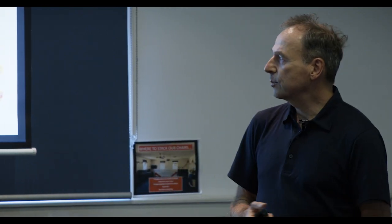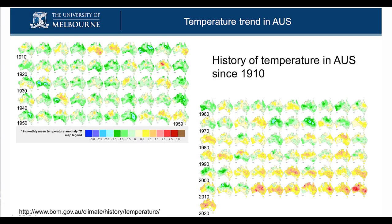This next slide is a visualization of the temperature changes. The green or beige colors indicate a normal average temperature; the redder and warmer colors indicate a warmer year; the blue colors indicate a colder year. Comparing 1910 to 2020, there's not much change in the first half of the 20th century up until the 1960s, but then the colors shift from green to more orangey and red.